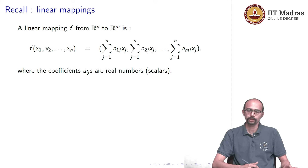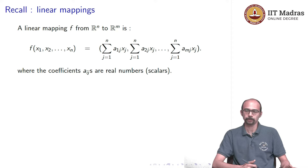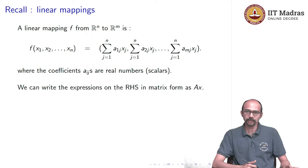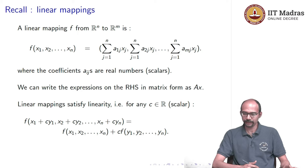We saw the use of such a thing — for example, we looked at the examples of the grocery shops. Linear mappings have some very interesting properties called linearity. We can write this in the form of a matrix multiplication, A times x, where the (i,j)th entry of the matrix A is a_ij, and x is the column vector (x1, x2, ..., xn).